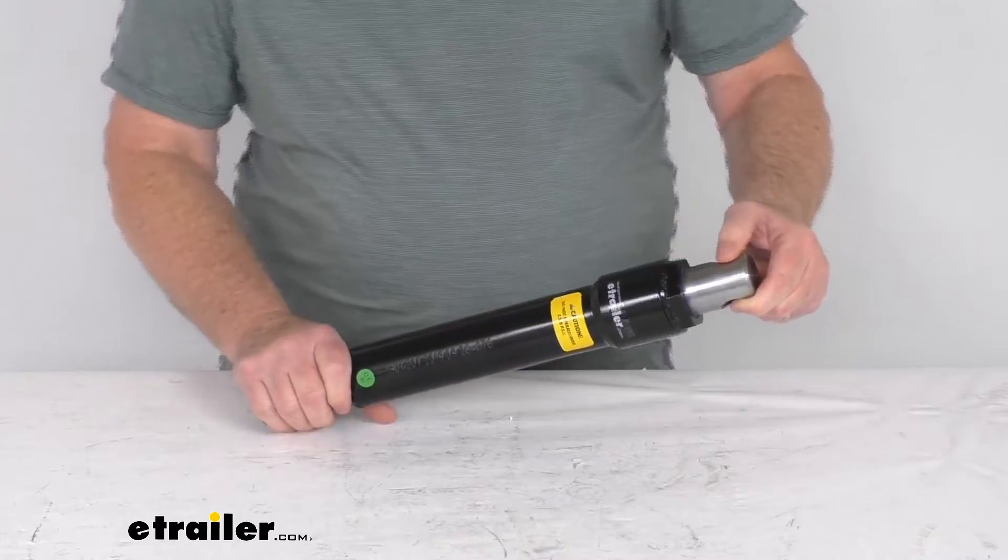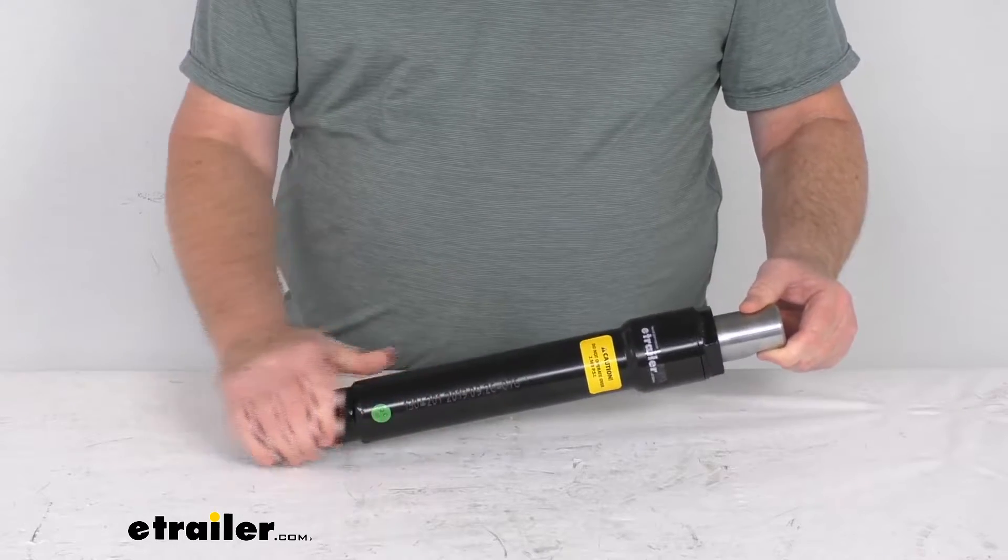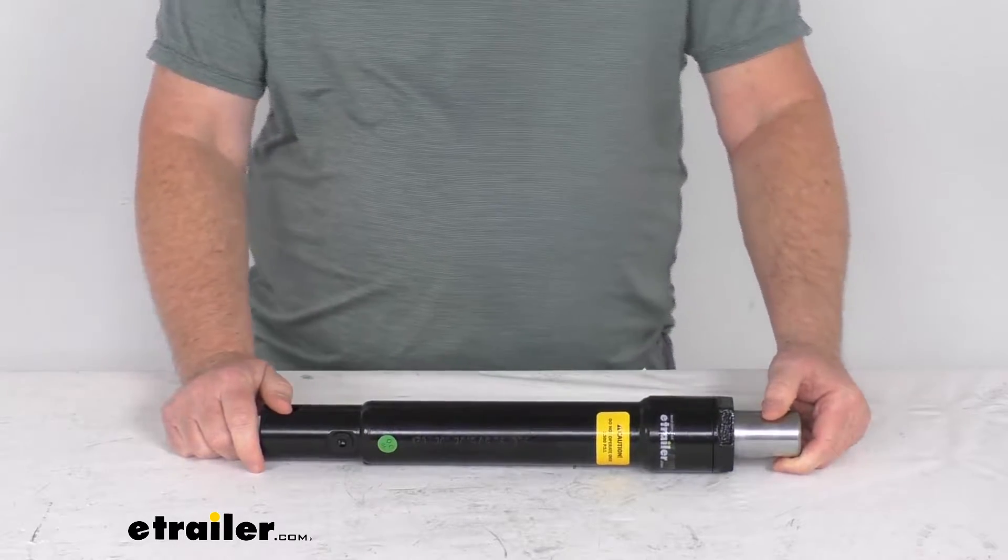This will replace a single-acting lift cylinder on your Western snowplow. It is designed to replace the Western part number 56538K.